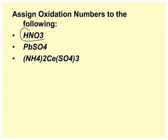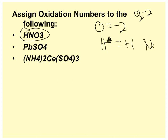Assigning oxidation numbers to the following. We've done this before. So remember, the rules of oxidation numbers: oxygen is always negative 2 unless it's peroxide. Hydrogen is always plus 1 unless it is NaH.